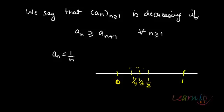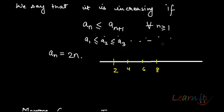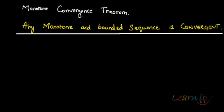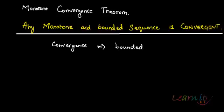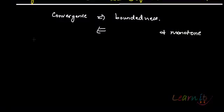There is something very interesting about monotone and bounded sequences, and that is what we will learn in the Monotone Convergence Theorem. The theorem says that any monotone and bounded sequence is convergent. Essentially, this is the converse of the fact that convergence implies boundedness. What we are saying is that if a sequence is bounded and monotone, then it is convergent.